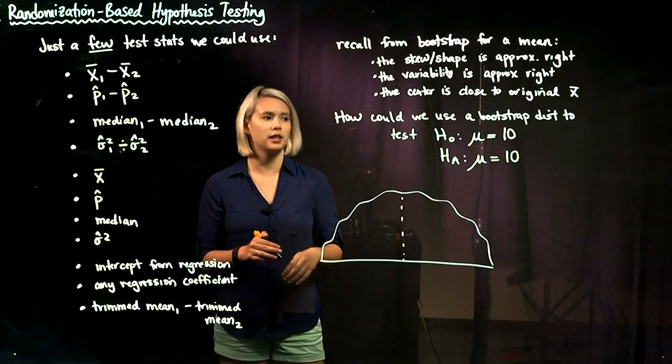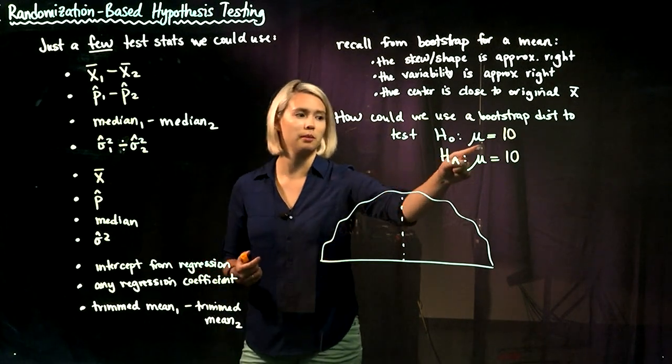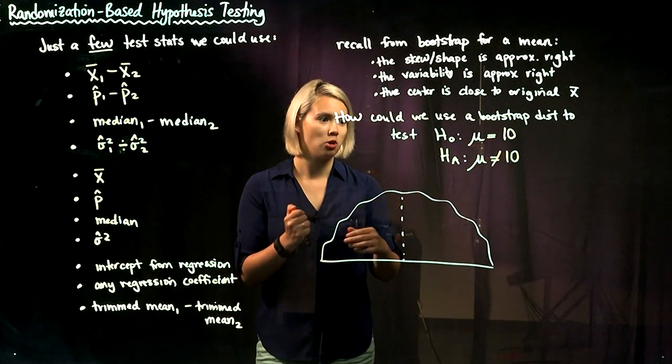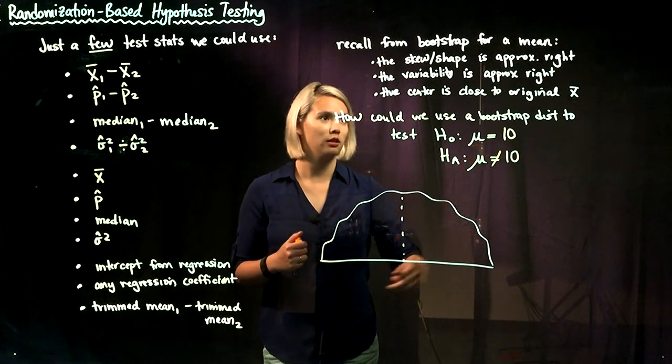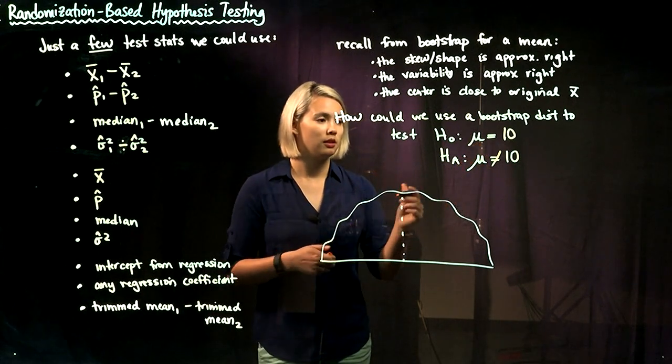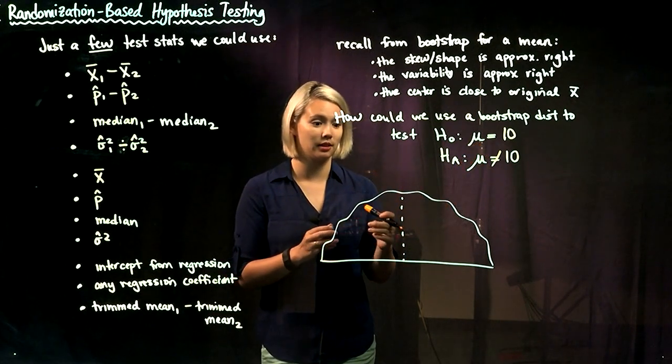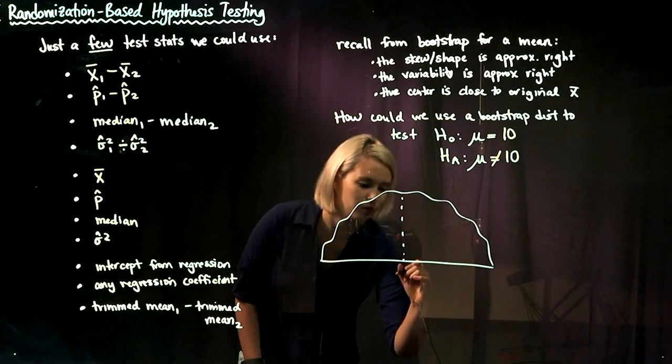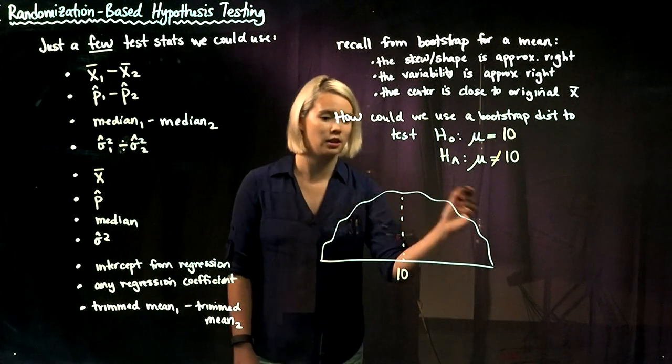So if we're trying to test, for example, whether a mean is equal to 10 or whether a mean is not equal to 10, then we would like our randomization-based hypothesis testing sampling distribution to be centered at 10.